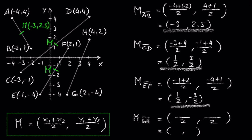Feel free to pause the video and try this on your own. 2 plus 4 is 6 and 6 divided by 2 is 3. Negative 4 plus 2 is negative 2 and negative 2 divided by 2 is negative 1.